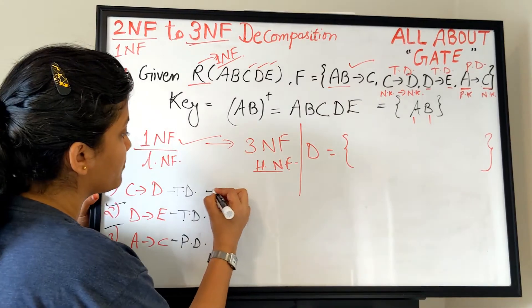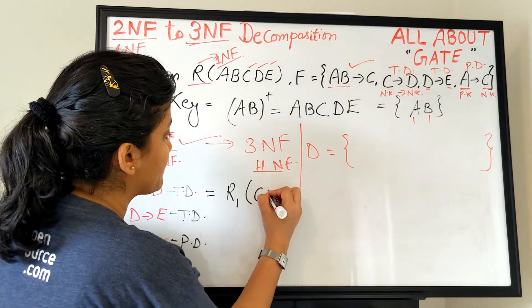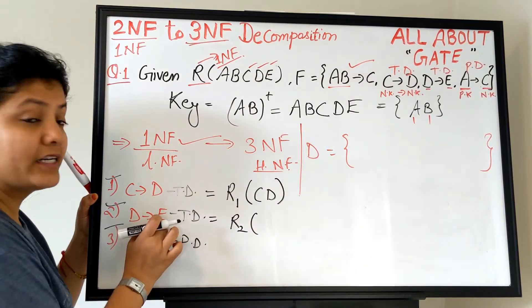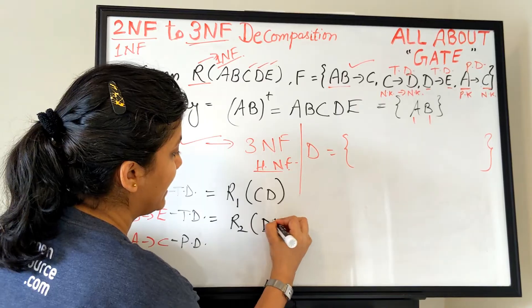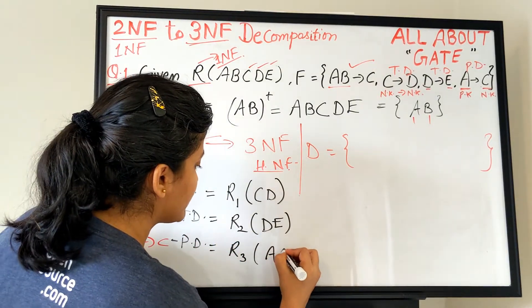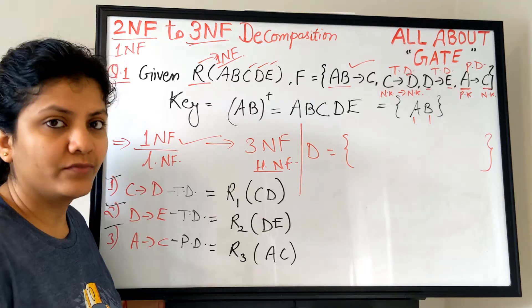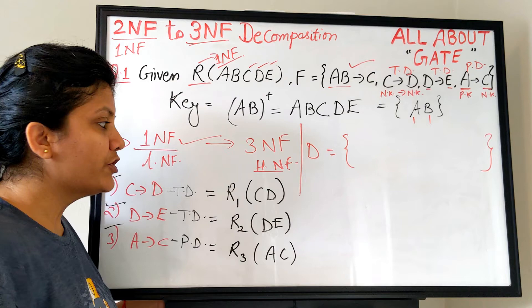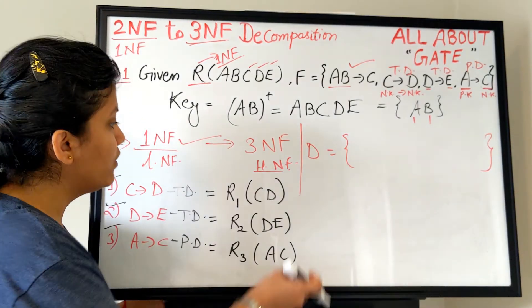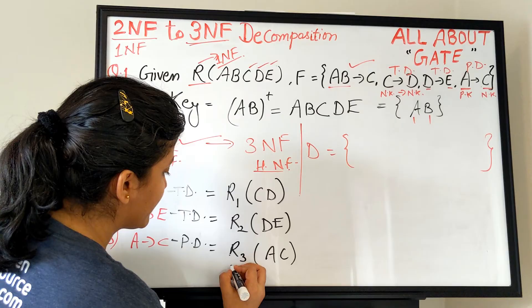What we are supposed to do is - whatever are the problems, so these three are the problems. For that, make a relation. So I make a relation R1 where I put the determinant and dependent as it is and make a separate relation. So that is R1 = CD. Then I make another relation R2 with the determinant and dependent part of second dependency which is a problem for us, and make a separate relation. Furthermore, the last dependency which is a problem, A to C, make one more for this. So I got R1, R2, R3. So somebody might think, are we done yet? No, we cannot. We are yet to get another relation R4 which will be there to make a join possible in future, you know lossless join property.